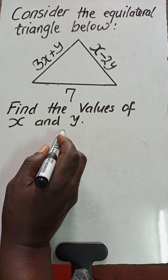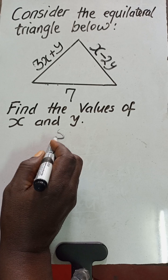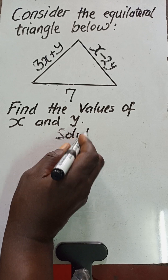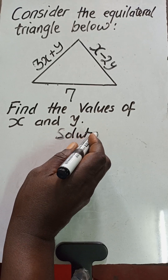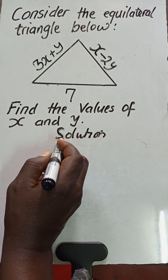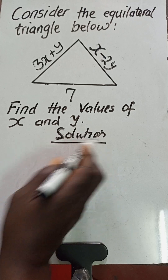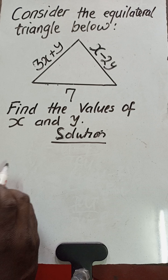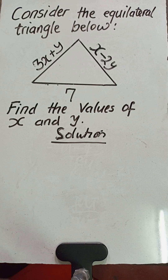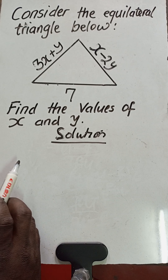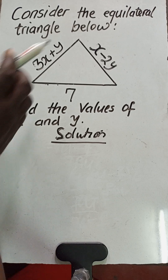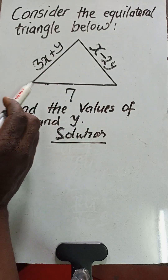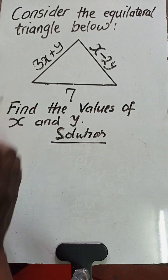What is the property of an equilateral triangle? We know that with an equilateral triangle, all three sides are equal. So we expect this side to be equal to that side, and to be equal to this side in length.